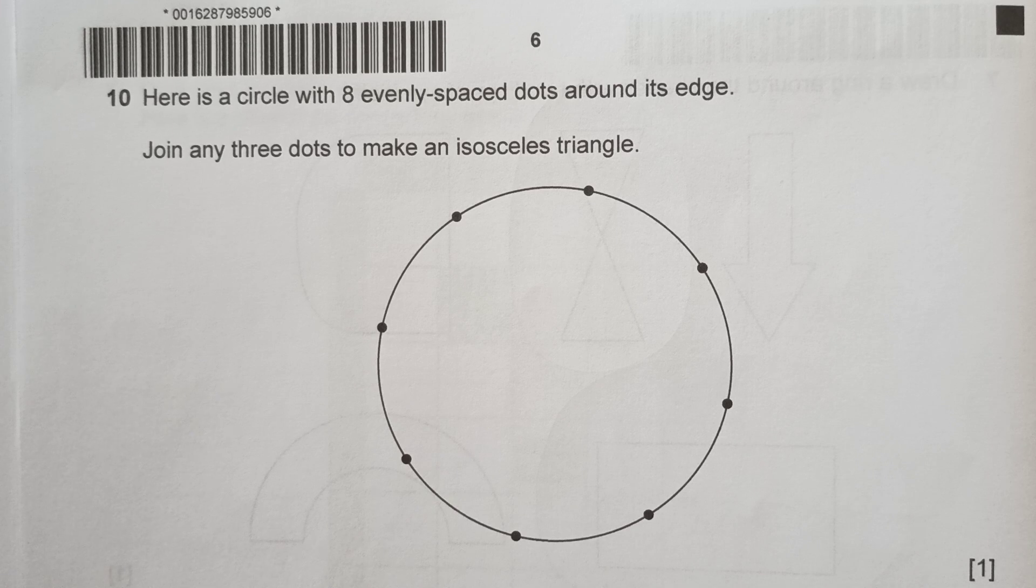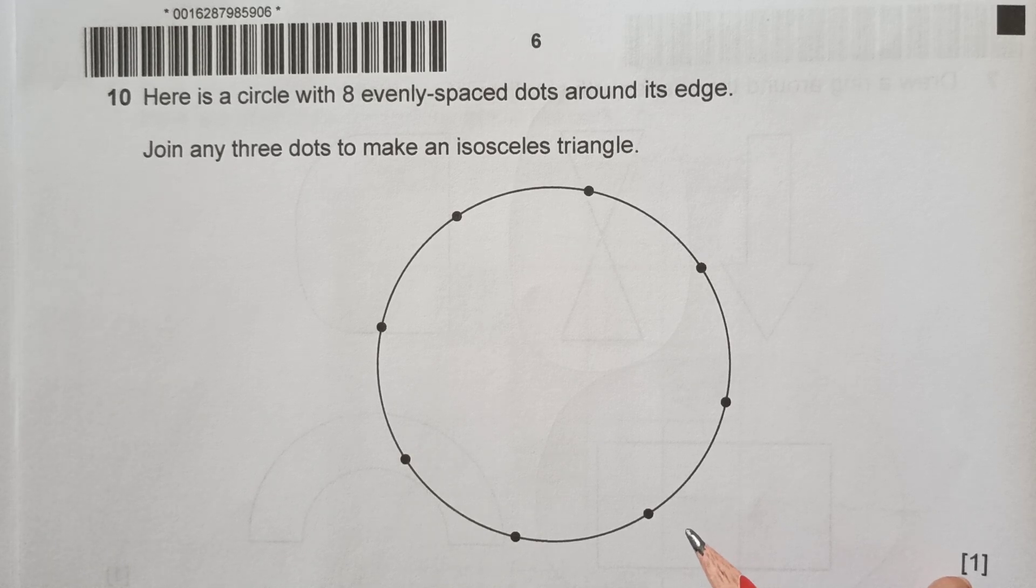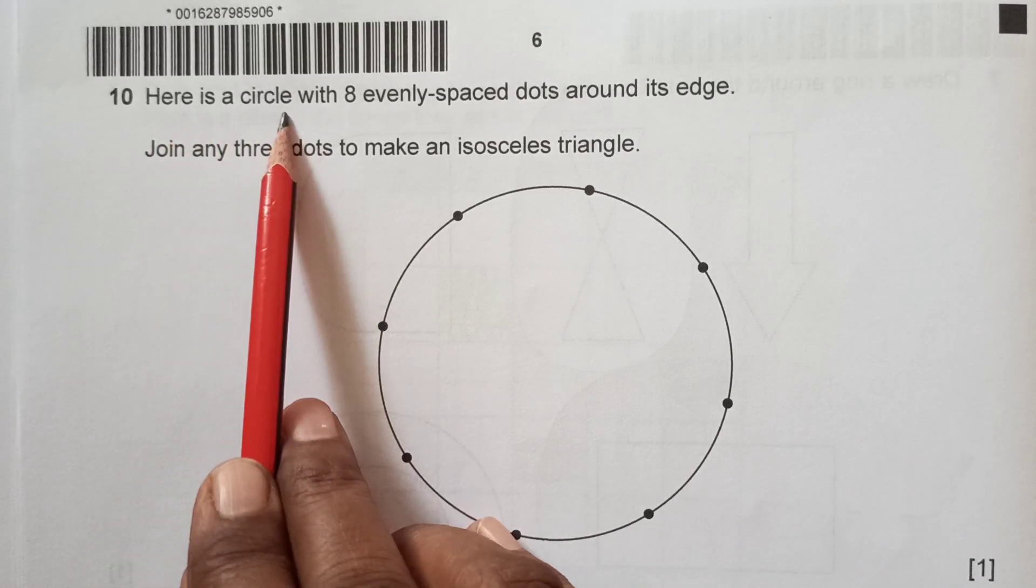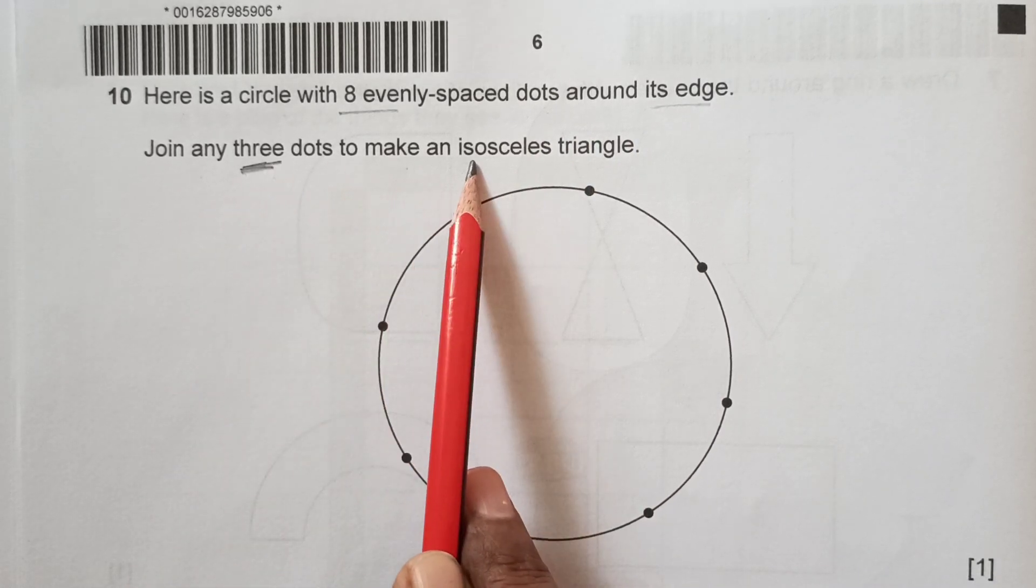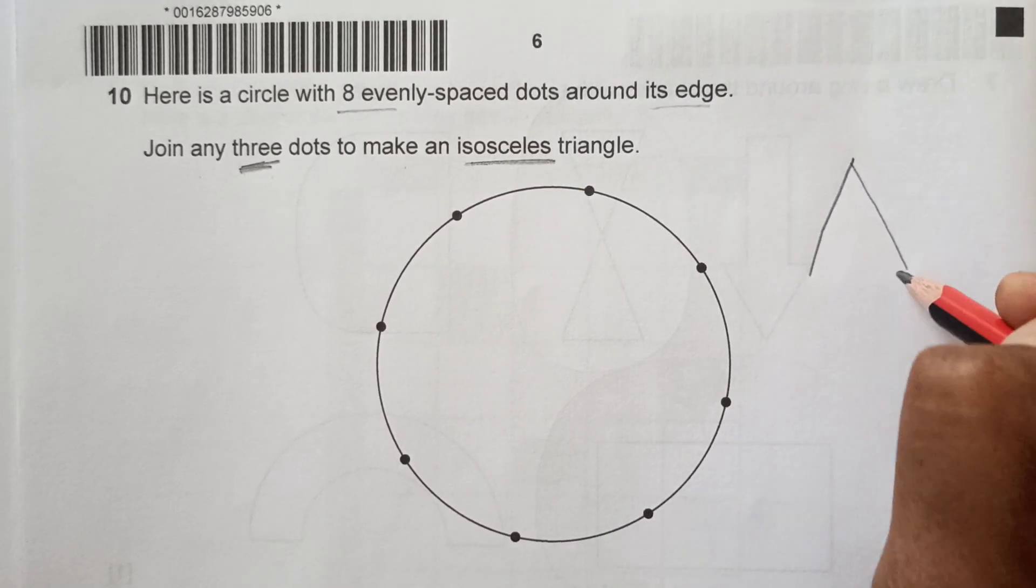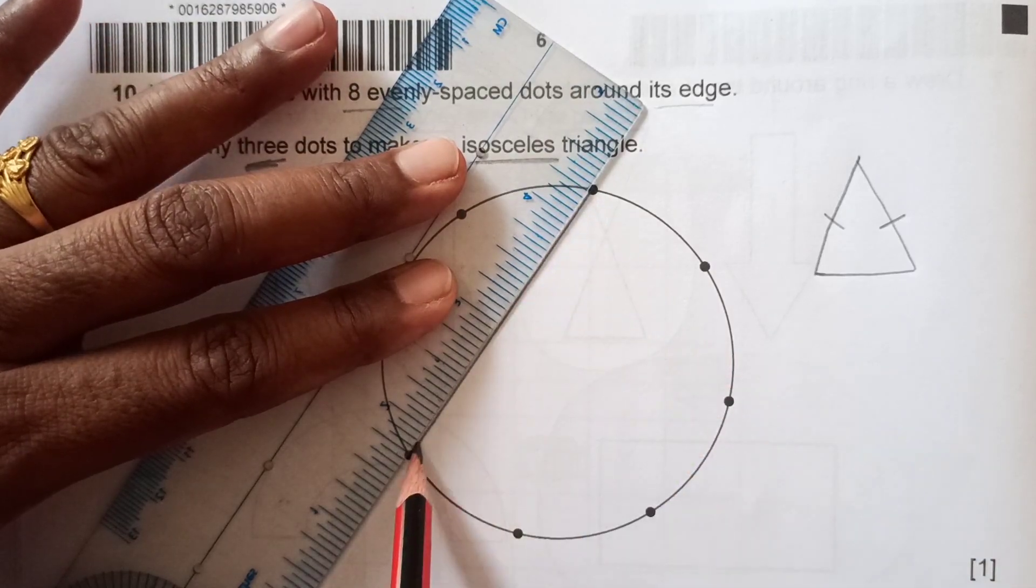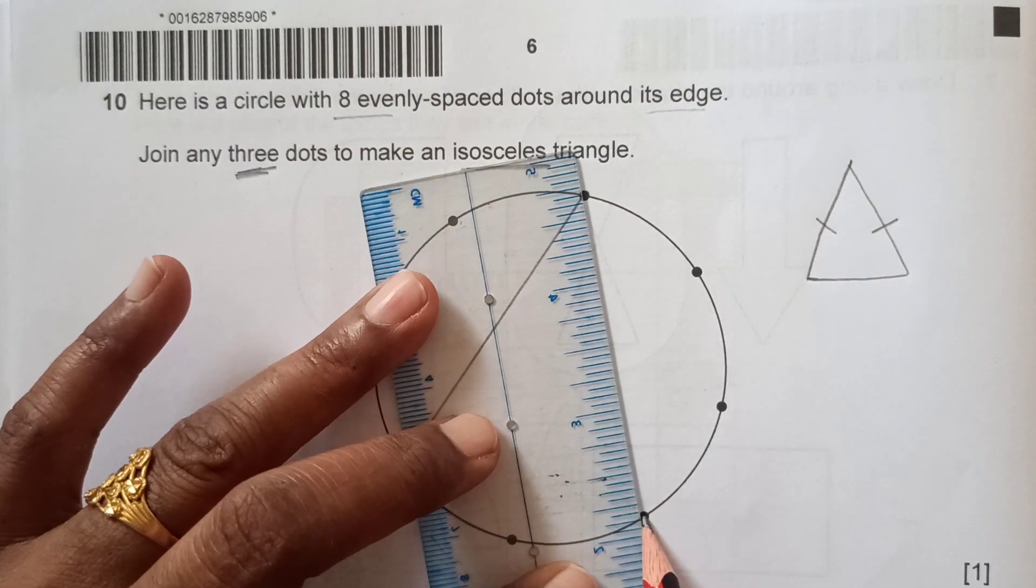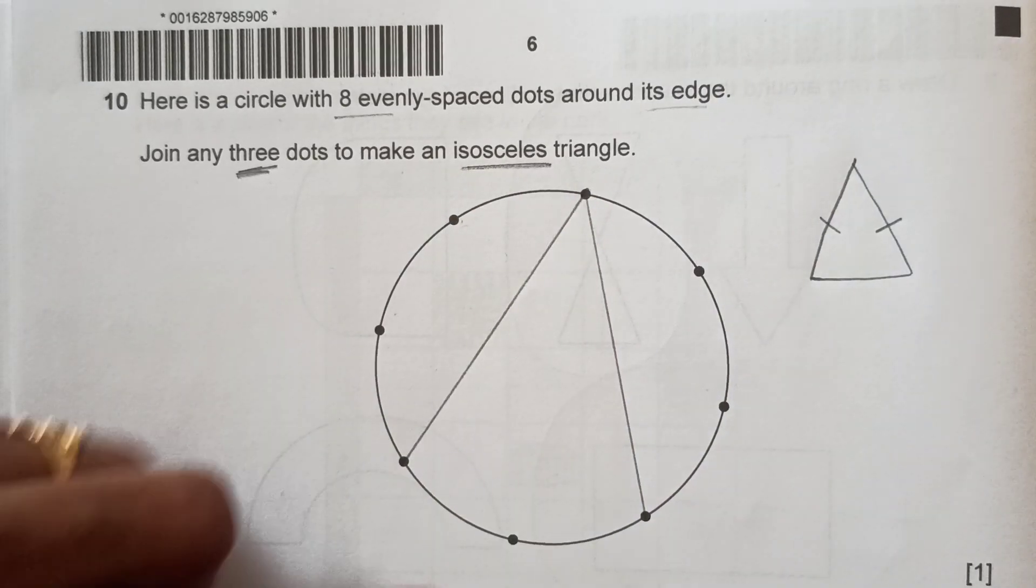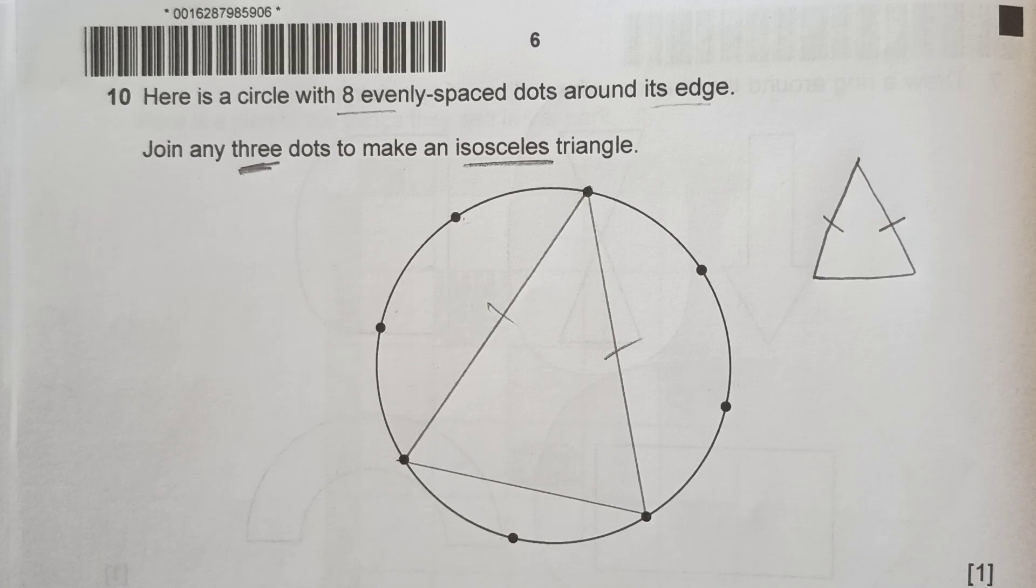Question 10: Here is a circle with 8 evenly spaced dots around its edge. Join any 3 dots to make an isosceles triangle. Isosceles triangle is like this, where 2 sides are equal. We can start from any point. Let's say I am starting from here. I have left 2 dots here, so again I will leave 2 dots on other side to make the space same. If I join this one, I am going to get an isosceles triangle. Here this side and this side is equal, that is isosceles triangle.